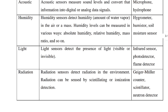Humidity sensors detect humidity — the amount of water vapor present. Humidity levels can be measured in various ways: absolute humidity, relative humidity, and mass ratio. Examples include the hygrometer, humistor, and soil moisture sensors. Soil moisture sensors are used because soil contains a lot of water content.